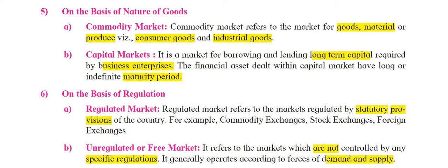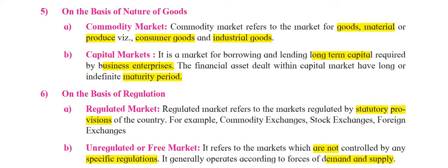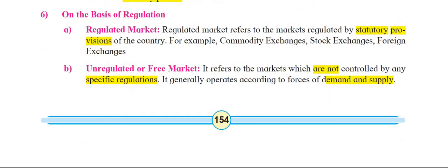The sixth classification is on the basis of regulation. These are types of markets where statutory provisions of the country are followed — statutory means mandatory, as per the rules and regulations. Examples include commodity exchanges, stock exchanges where buying and selling of shares takes place, companies listed on stock exchanges, and foreign exchanges. These are all regulated markets as per the rules and regulations of the country.